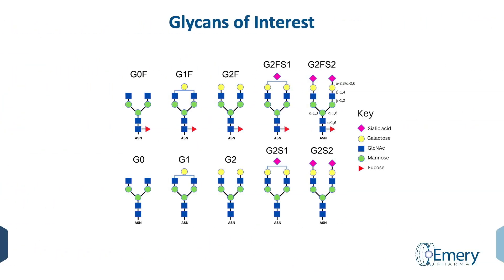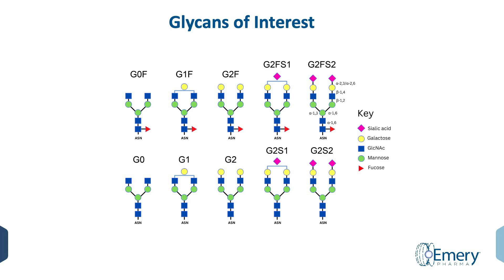The glycans of interest are shown on this slide. They consist of N-acetylglucosamine, mannose, fucose, galactose, and sialic acid.